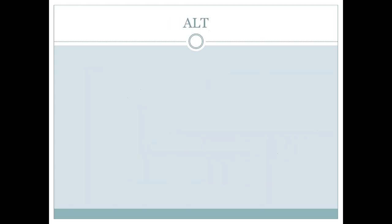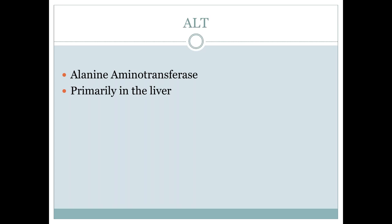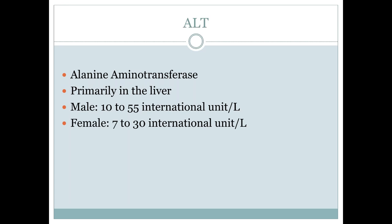Liver enzymes are done through blood work and they're usually included in what is called a complete metabolic panel or a hepatic function panel. These liver enzymes can be included on your routine screening blood tests from your physical exam. The first liver enzyme test is called ALT — alanine aminotransferase. It's predominantly made in the liver. The normal range for a male is 10 to 55, but we prefer no higher than 30. For a female, the normal range is 7 to 30, but we prefer only up to 20. So even if your numbers are within the normal range, they might actually still be a little elevated.